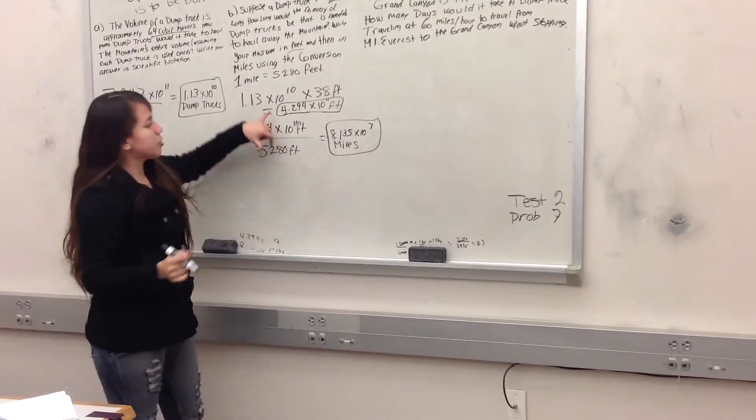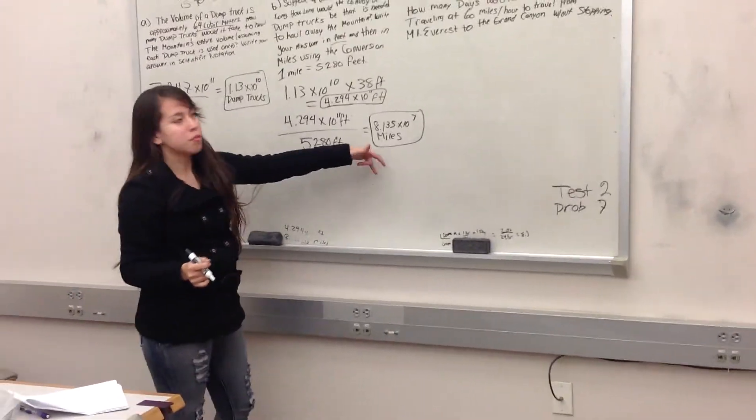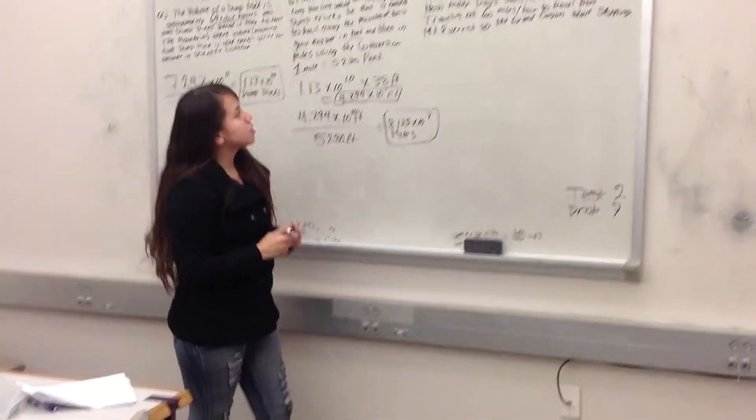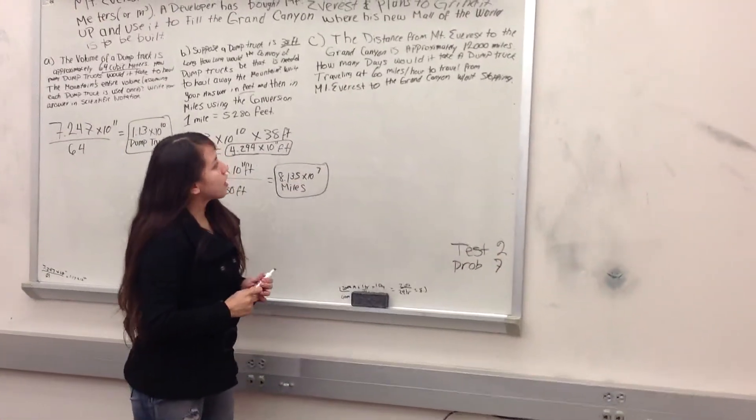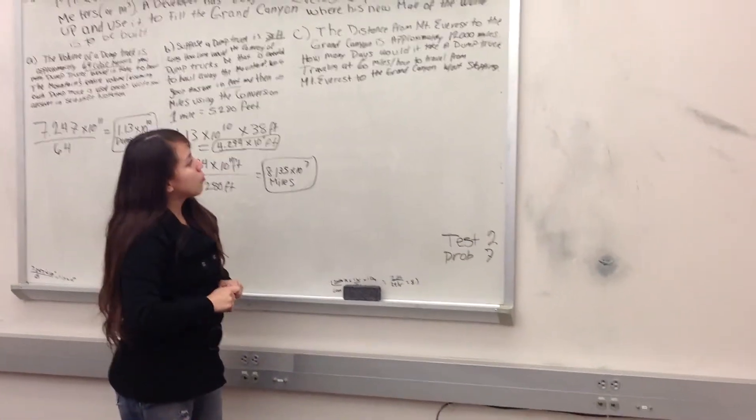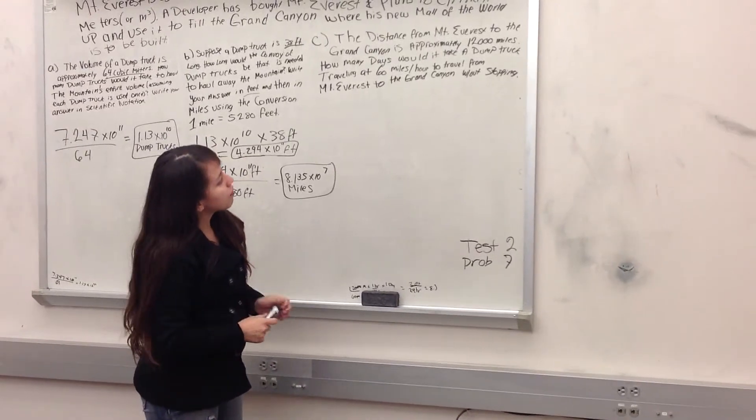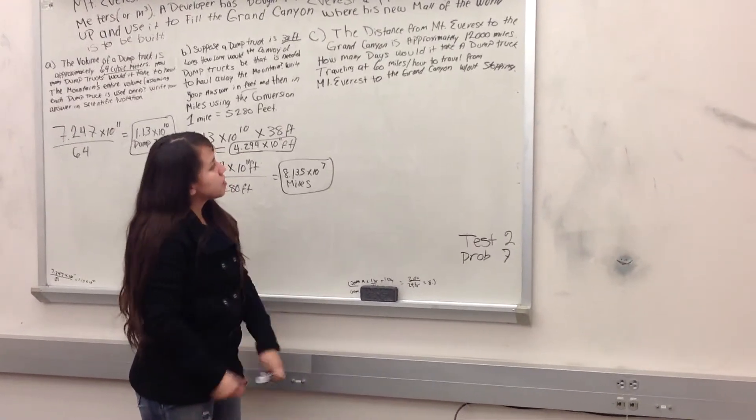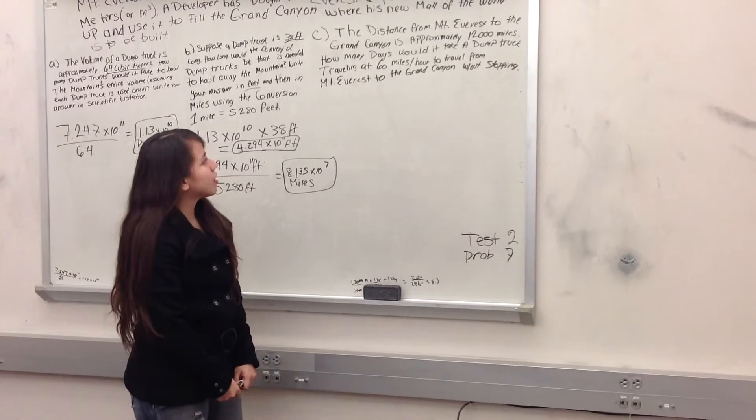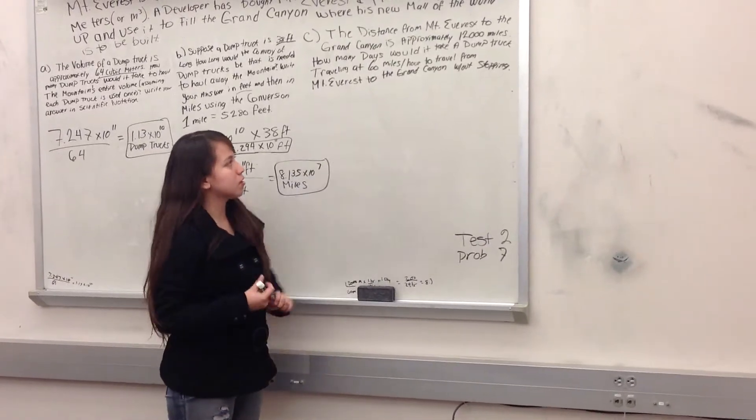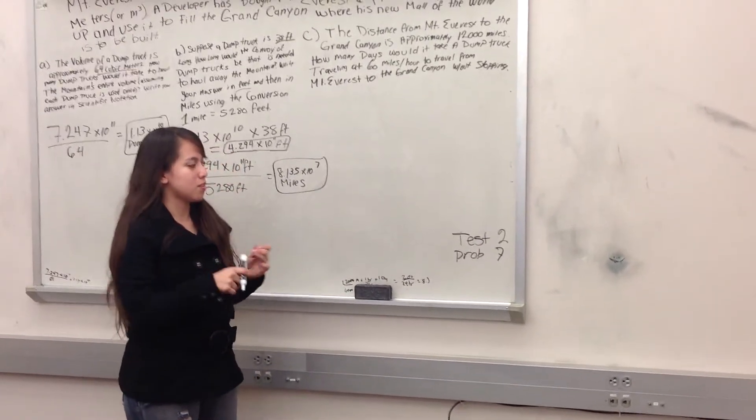So this is how much it would be in feet, and this one in miles. And then for part C, the distance from Mount Everest to the Grand Canyon is approximately 12,000 miles. How many days would it take a dump truck traveling at 60 miles an hour to travel from Mount Everest to the Grand Canyon without stopping?